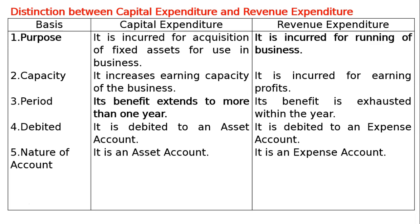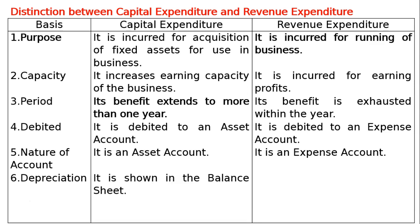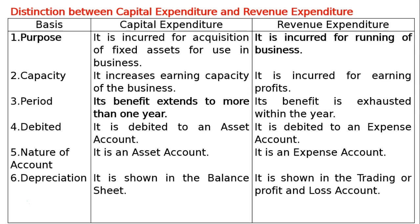The sixth basis is depreciation. In case of capital expenditure, it is shown in the balance sheet — depreciation is deducted from the assets on the asset side of the balance sheet. In case of revenue expenditure, it is shown in the trading or profit and loss account.